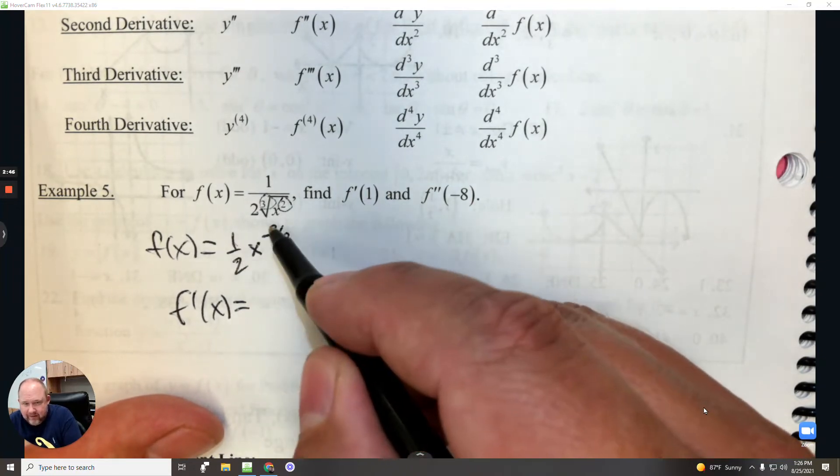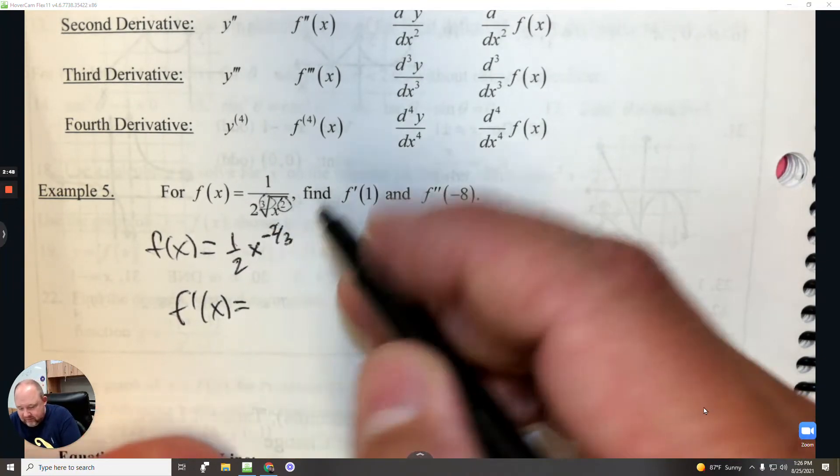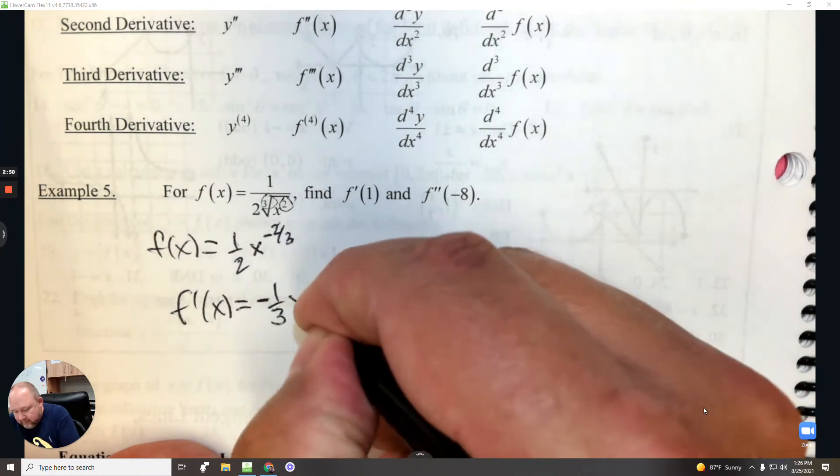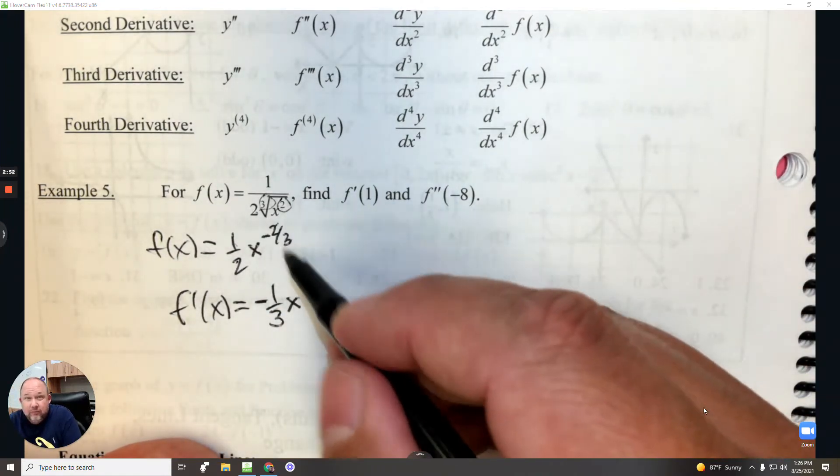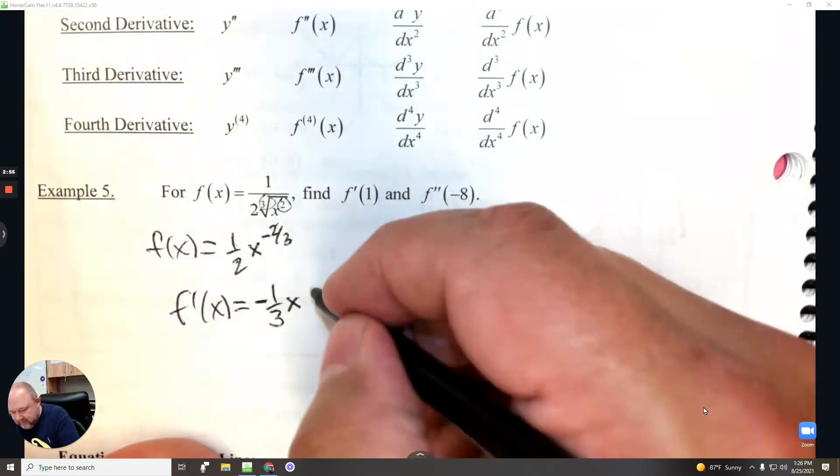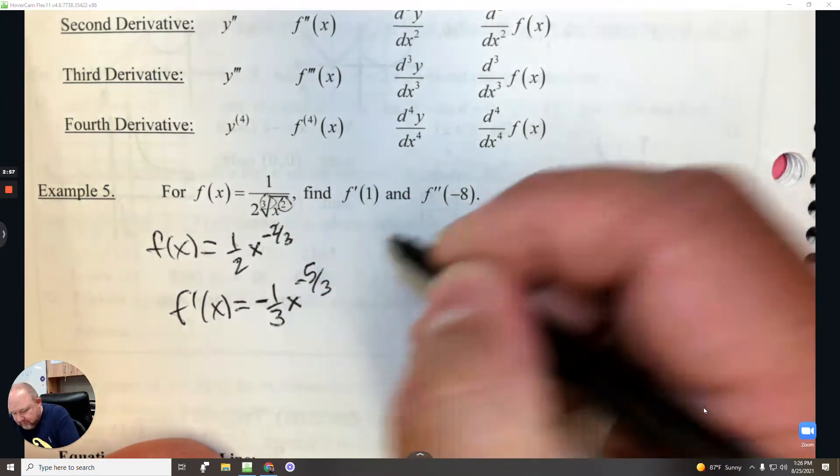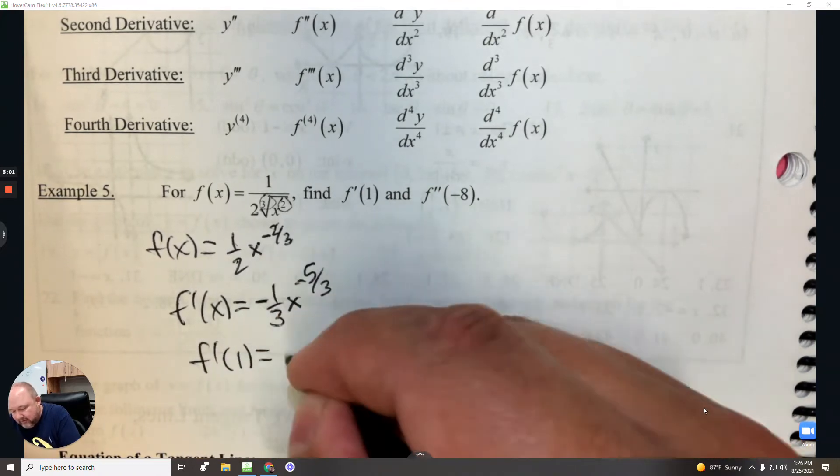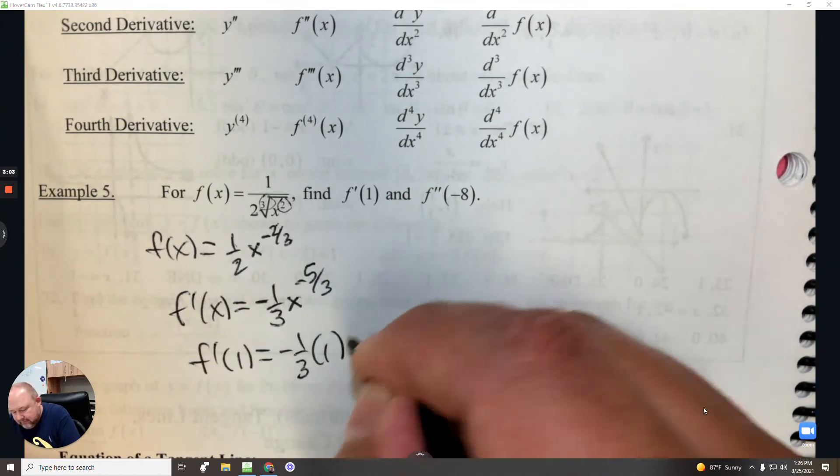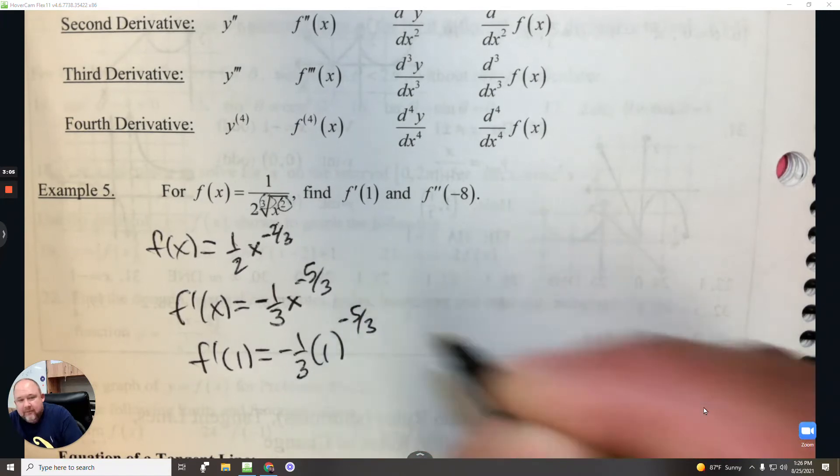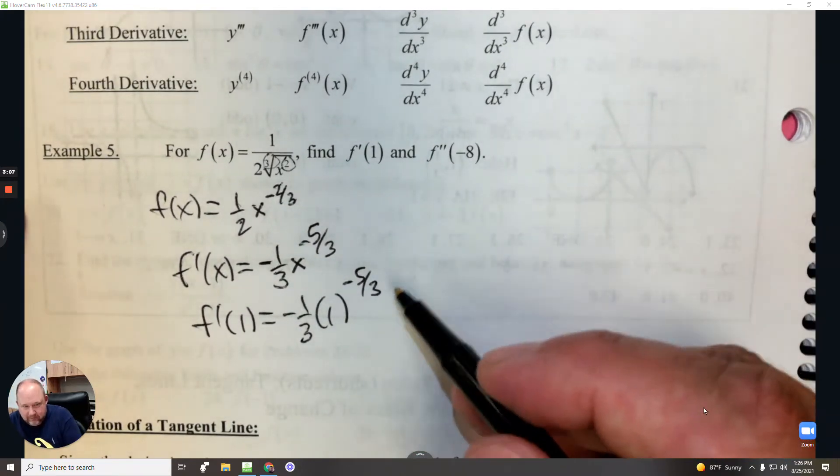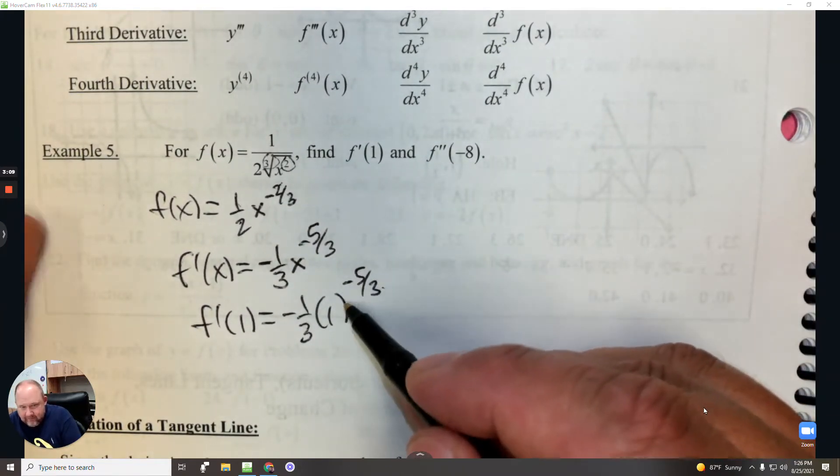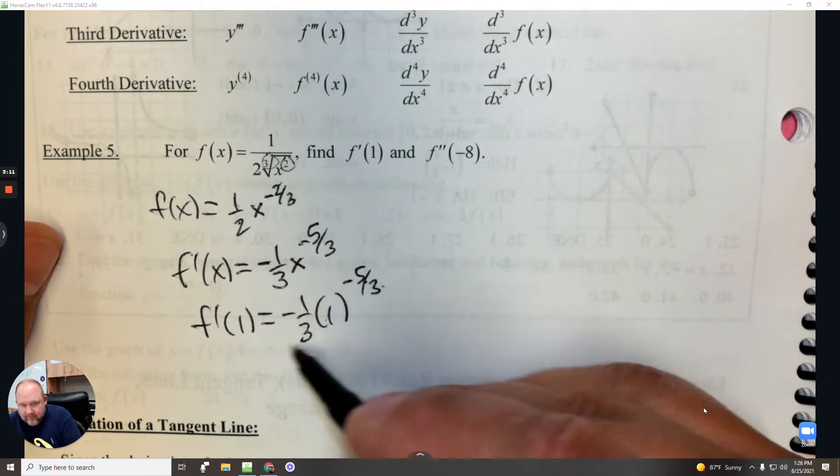For the first derivative, we're going to multiply. When I multiply 1 half times negative 2 thirds, the 2's cross out and leave you with negative 1 third. When you subtract 1, negative 2 take away 3, that's negative 5 over 3, and there's the derivative. So if I evaluate at 1, the good news about a base of 1 is 1 to any exponent just equals 1. So this is 1 times negative 1 third.